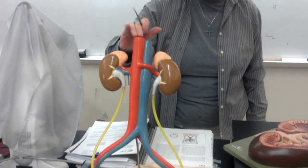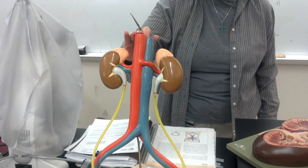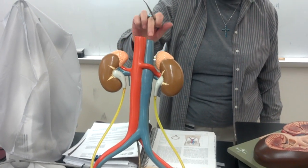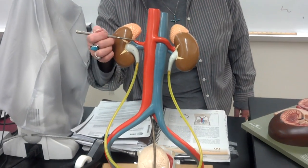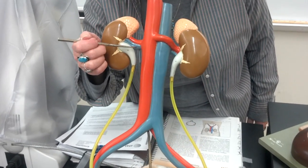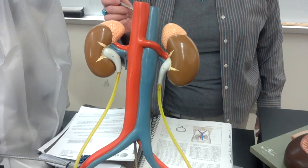Here we have the abdominal aorta, which you already saw when you were doing the blood vessels, and the inferior vena cava. And you can see coming off of those, the renal artery and vein on both sides.